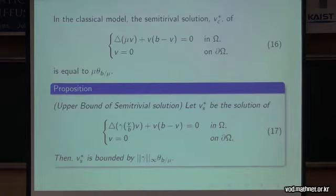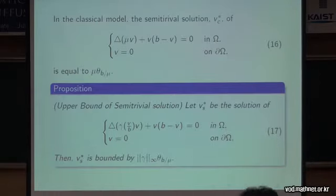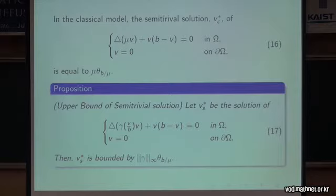Let us denote the semi-trivial solution for the classical model as phi_c, equal to mu times theta of b over mu. In the last slide, we noted that if the diffusivity is 1, then we denote theta-a as the positive solution. Then the solution is mu times beta of b over mu. We first want to find an upper bound for this semi-trivial solution. If gamma is bounded, then we can show that our semi-trivial solution for starvation-driven diffusion is bounded by the sup-norm of gamma times theta of b over mu. This is the first bound we can get.